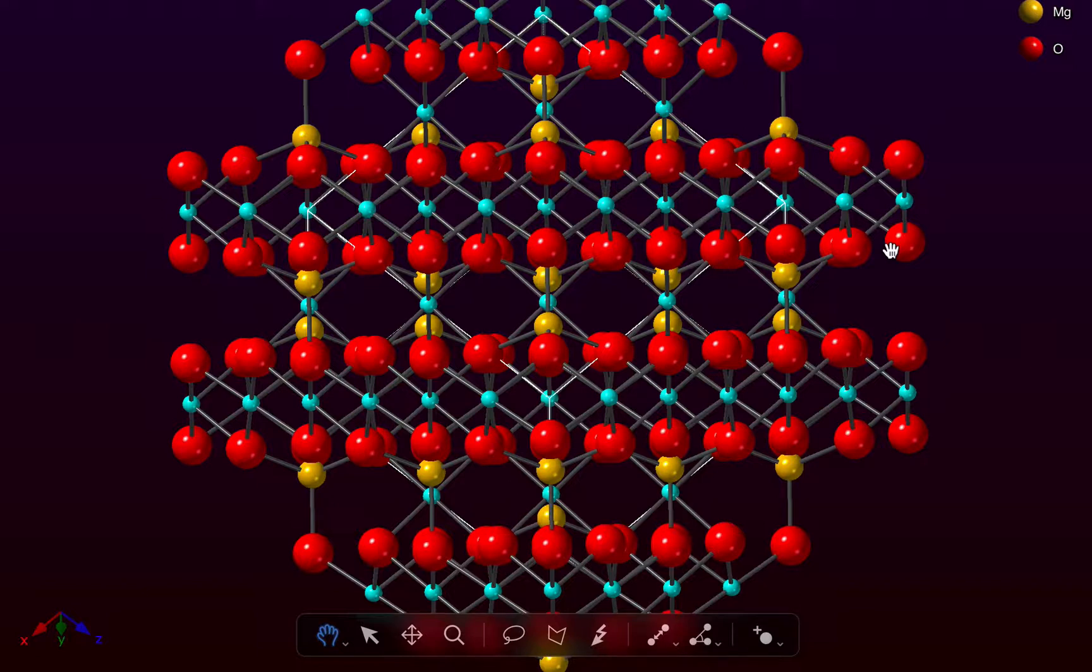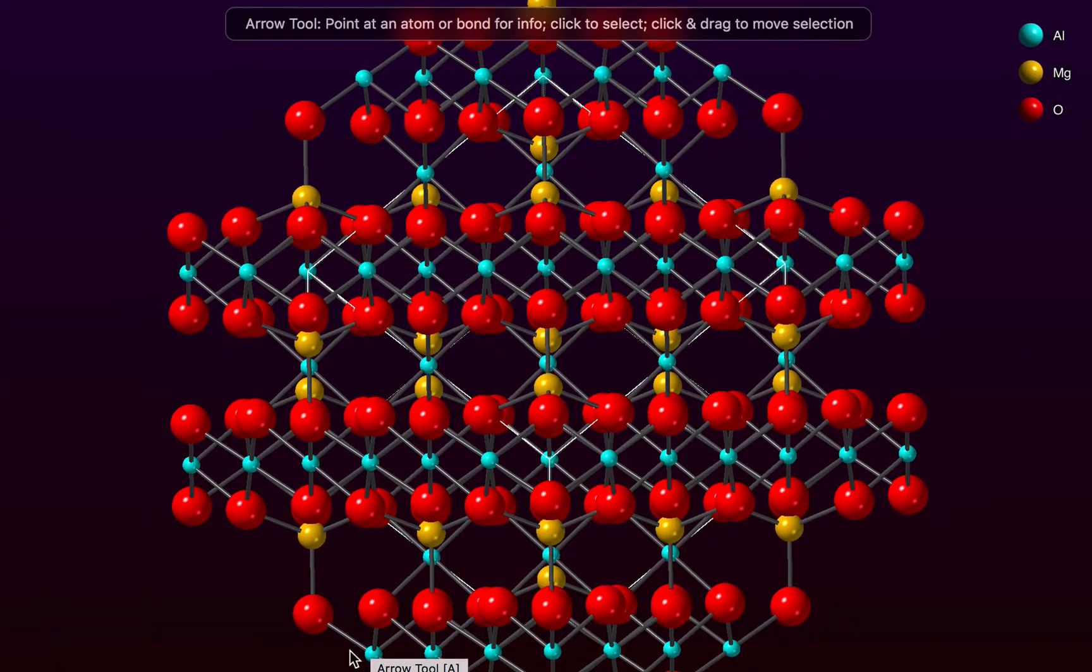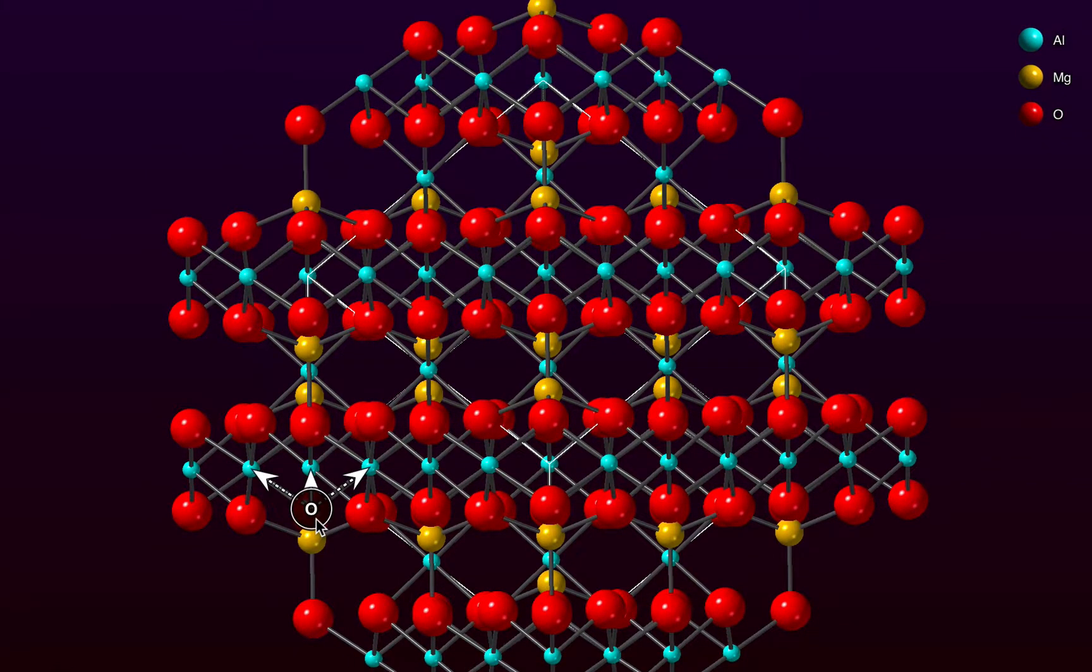So the first thing I'm going to do is move down to the tool strip at the bottom of the window and choose the arrow tool. This is a very versatile tool. You can use this as a rollover tool to measure and identify atoms or groups of atoms in your structure, but it also functions as a selection tool.